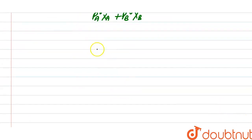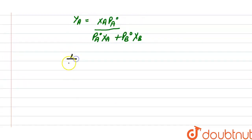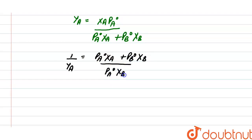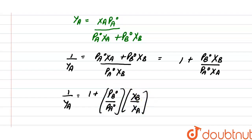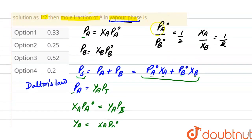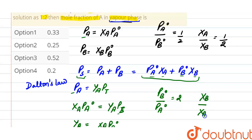Reciprocating: 1 divided by mole fraction of A in vapor phase equals (PA° × XA + PB° × XB) divided by (PA° × XA), which simplifies to 1 plus (PB° × XB) divided by (PA° × XA), or 1 plus (PB°/PA°) × (XB/XA). From the given data, PB°/PA° = 2 and XB/XA = 2.